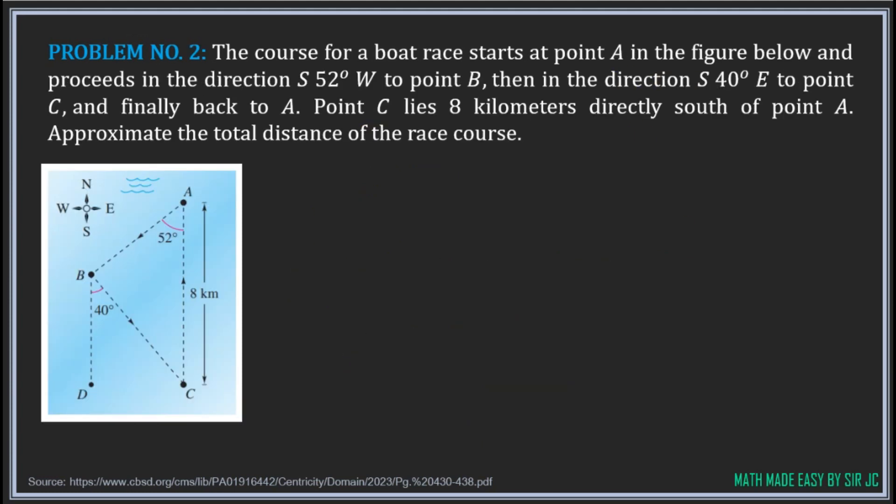Let's have the second problem. The course for a boat race starts at point A and proceeds in the direction 52 degrees west of south to point B, then in the direction 40 degrees east of south to point C, and finally back to A. Point C lies 8 kilometers directly south of point A. Approximate the total distance of the race course.